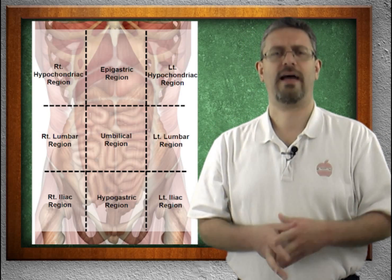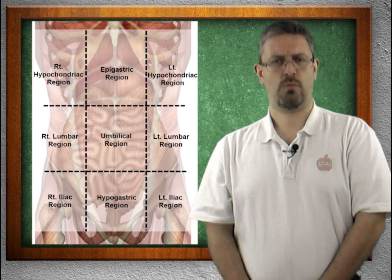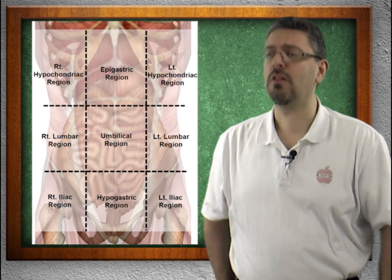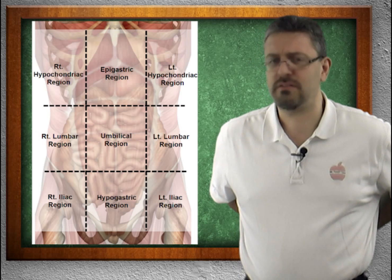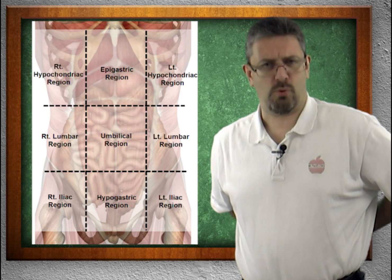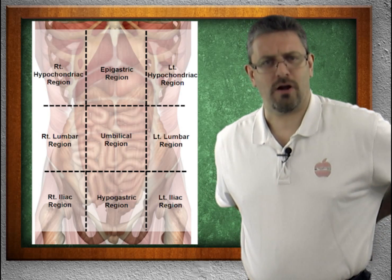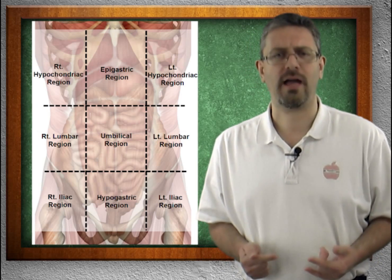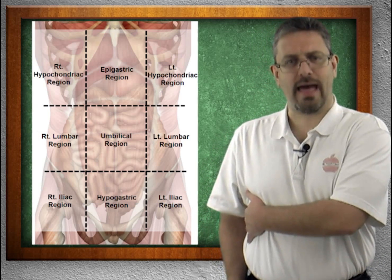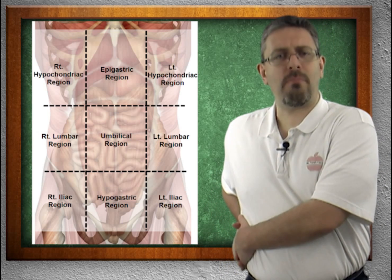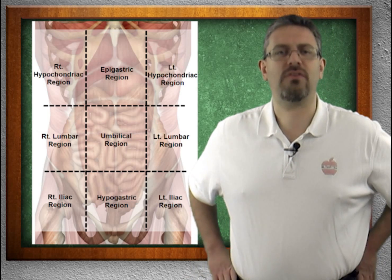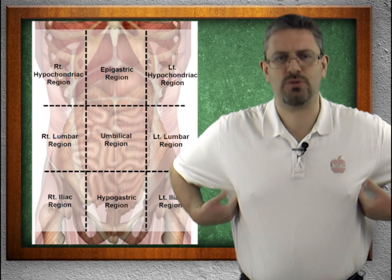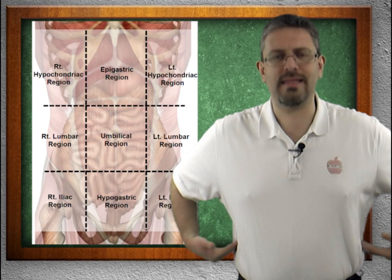Do you have a chair with lumbar support? If you don't, you really should, because the lumbar region refers to the lower part of your back — lumbar support supports your lower back. So we have the hypochondriac region, the lumbar area, and the hips — the iliac region. Hypochondriac, lumbar, iliac — left and right. Life just got a lot easier.